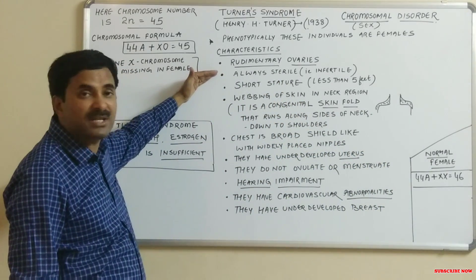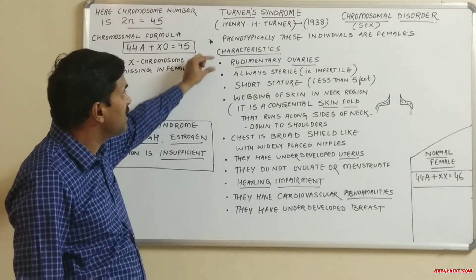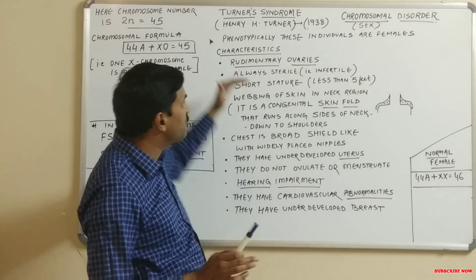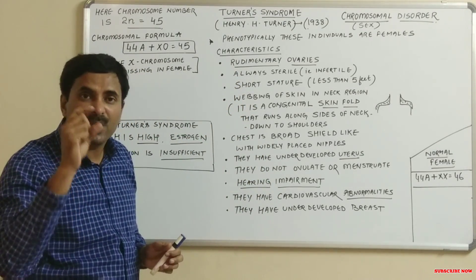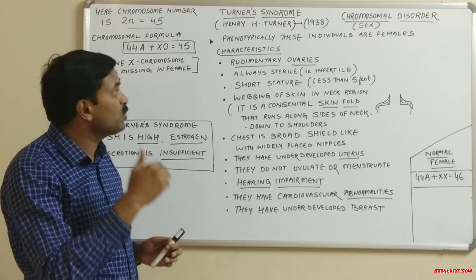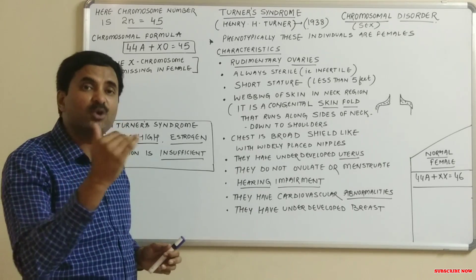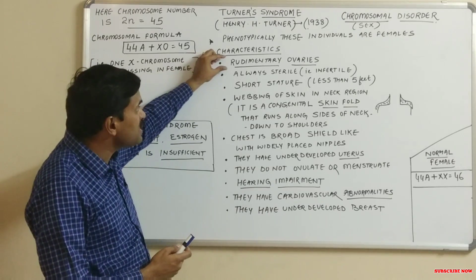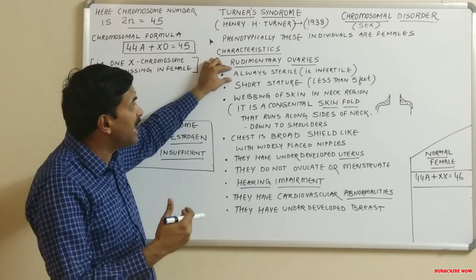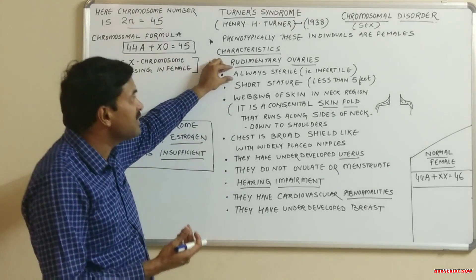The chief characteristics of a Turner syndrome female include rudimentary ovaries — meaning the ovaries are ill-developed. Not only the ovaries but also the oviducts and uterus are underdeveloped. Because of these underdeveloped gonads, these individuals show sterility — they are infertile and lack the power of fertilization.